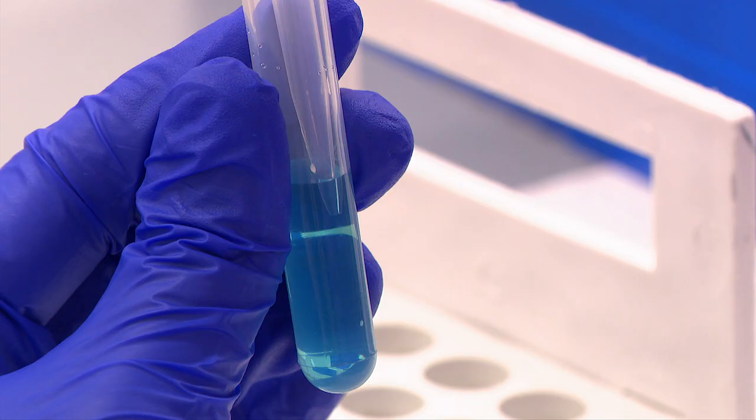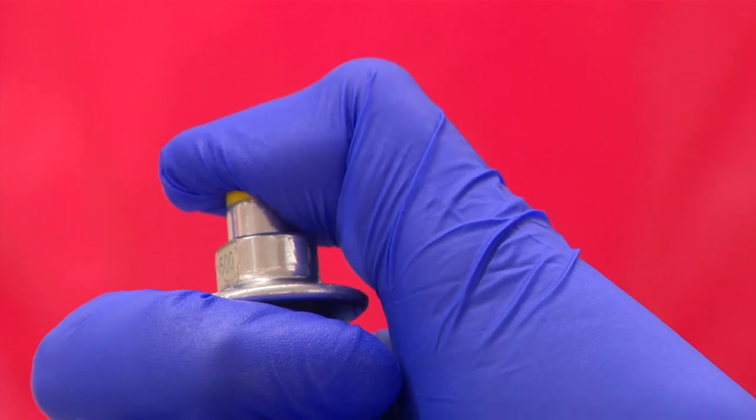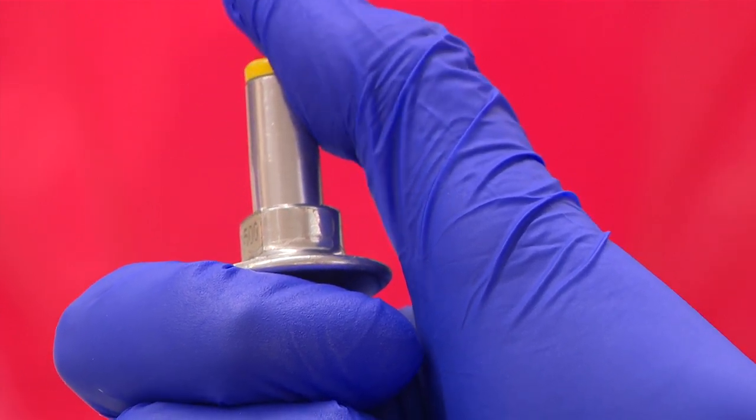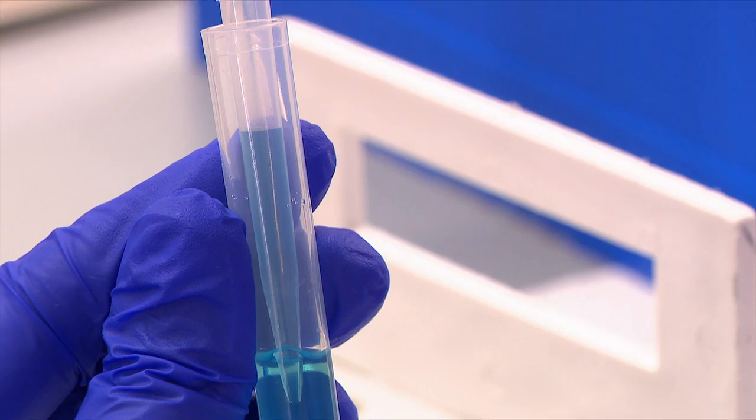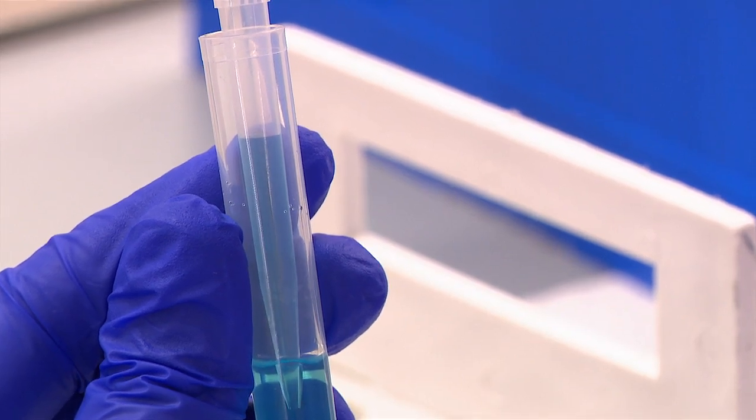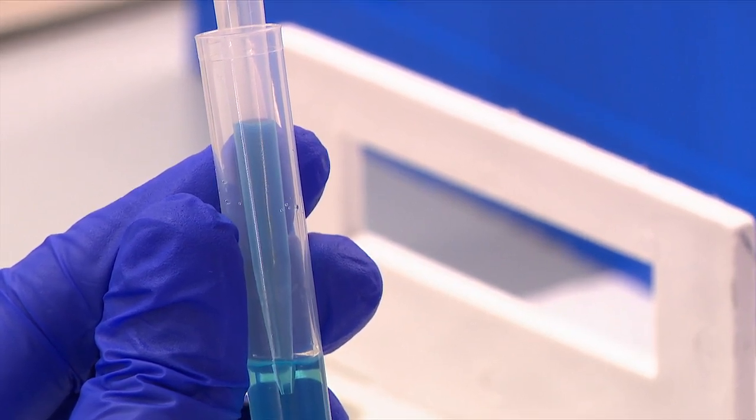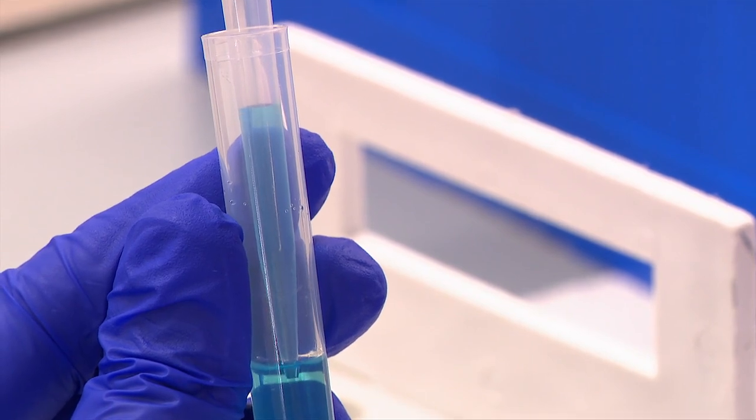Hold the pipette vertically and immerse the tip approximately 2 to 3 millimeters deep into the sample solution. Gently and slowly return the plunger button to up position. Pause for one second to allow the solution to enter the pipette tip. Do not let it snap back.